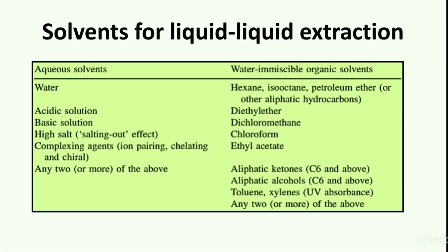Different types of aqueous and water-immiscible organic solvents can be used in different combinations. For example, with water as the aqueous solvent, we can use hexane, isooctane, petroleum ether, or any other aliphatic hydrocarbon as the organic solvent. For acidic solutions we can use diethyl ether, for basic solutions dichloromethane, and for complexing agents ethyl acetate can be used as the organic solvent.